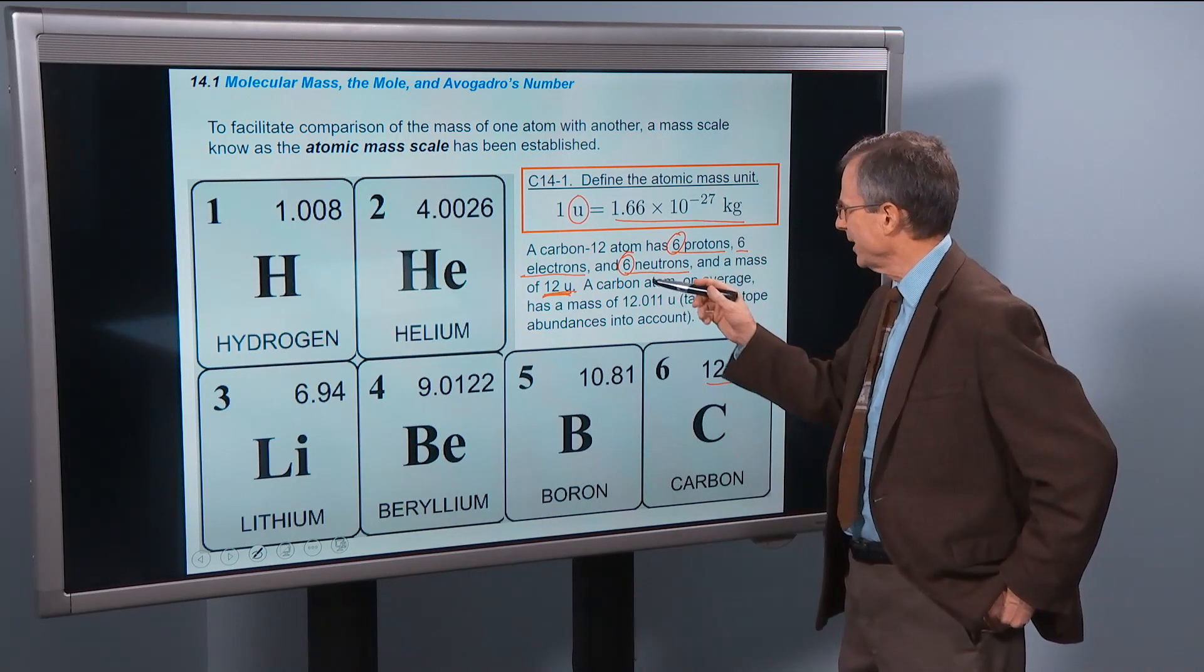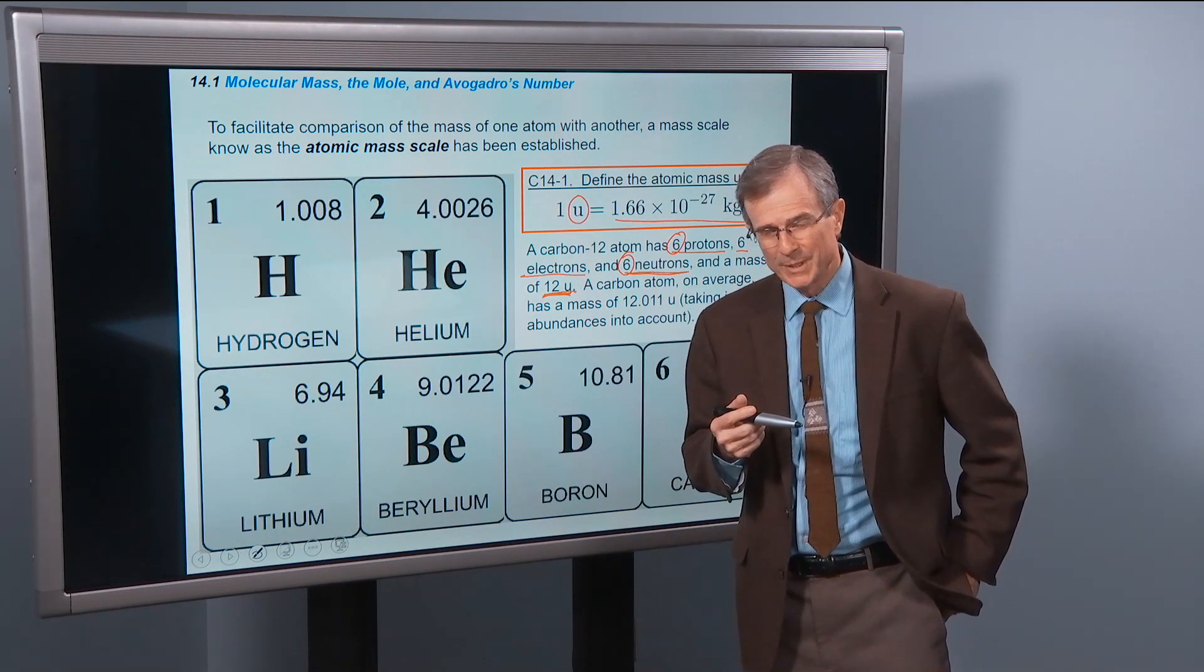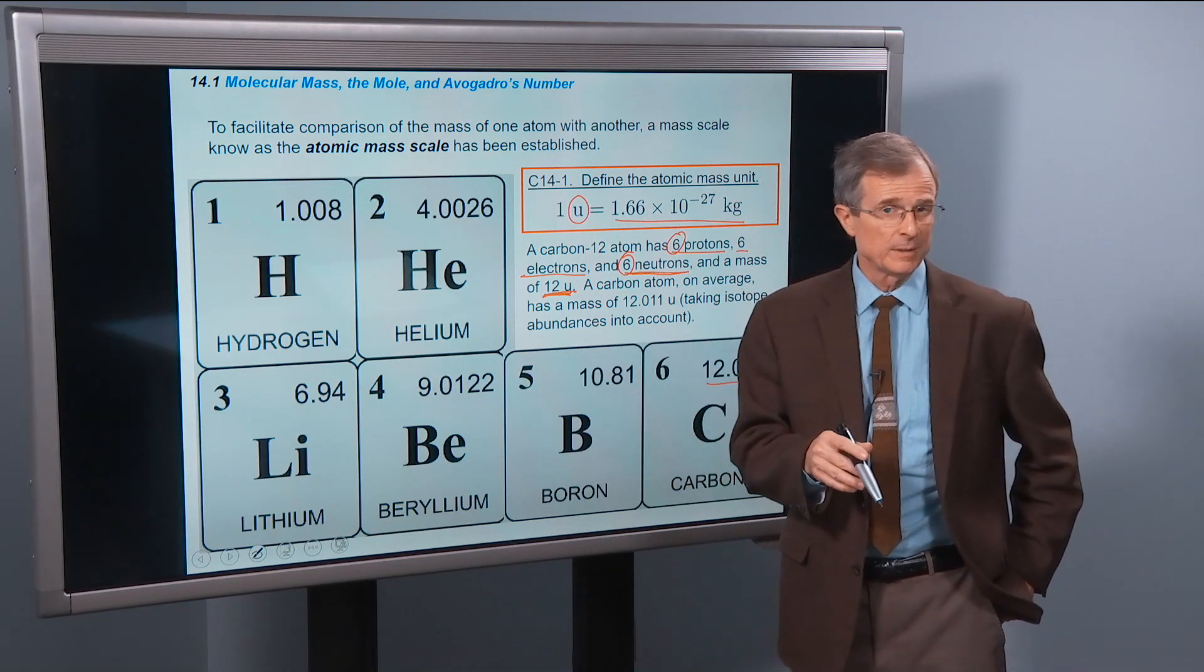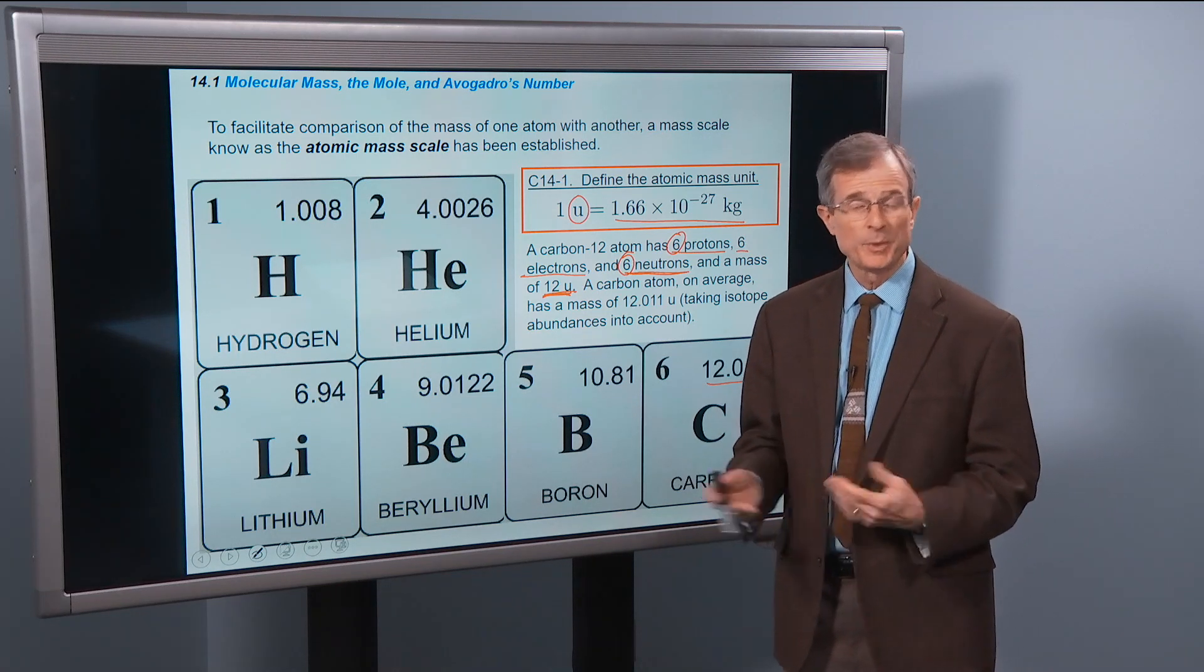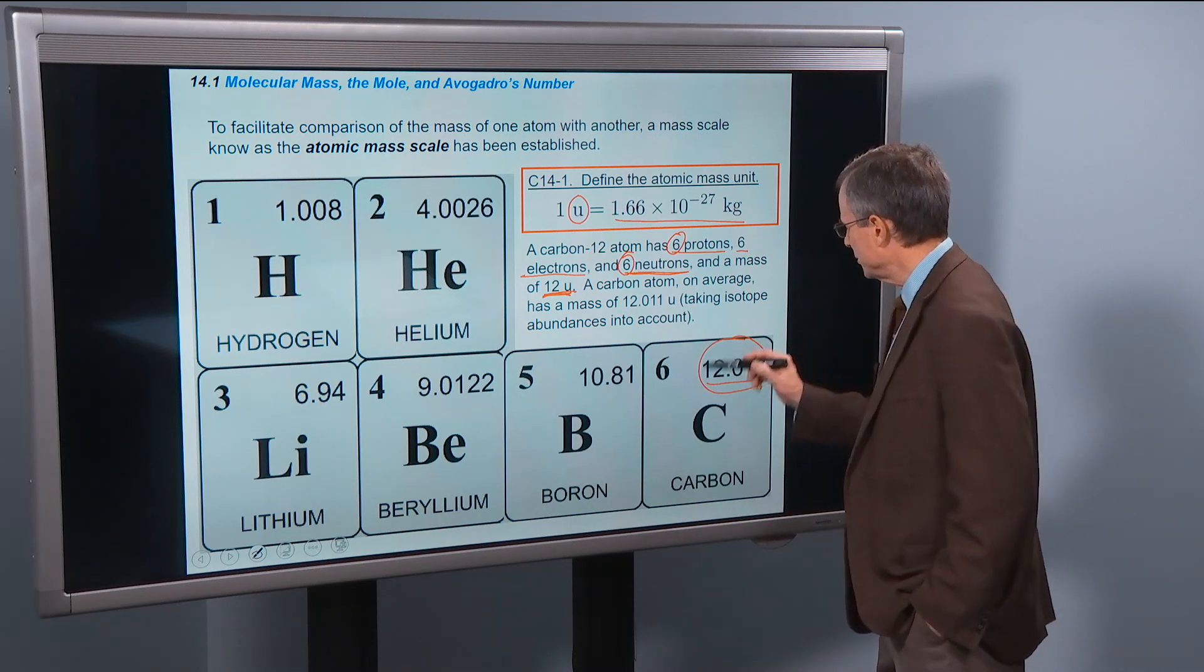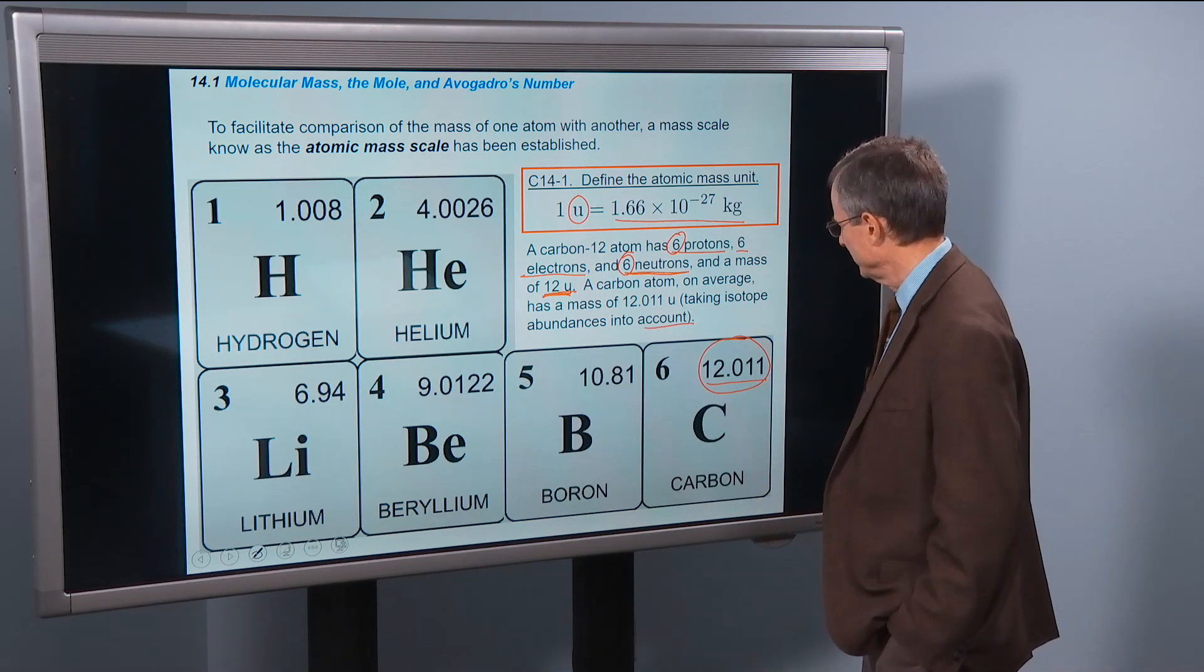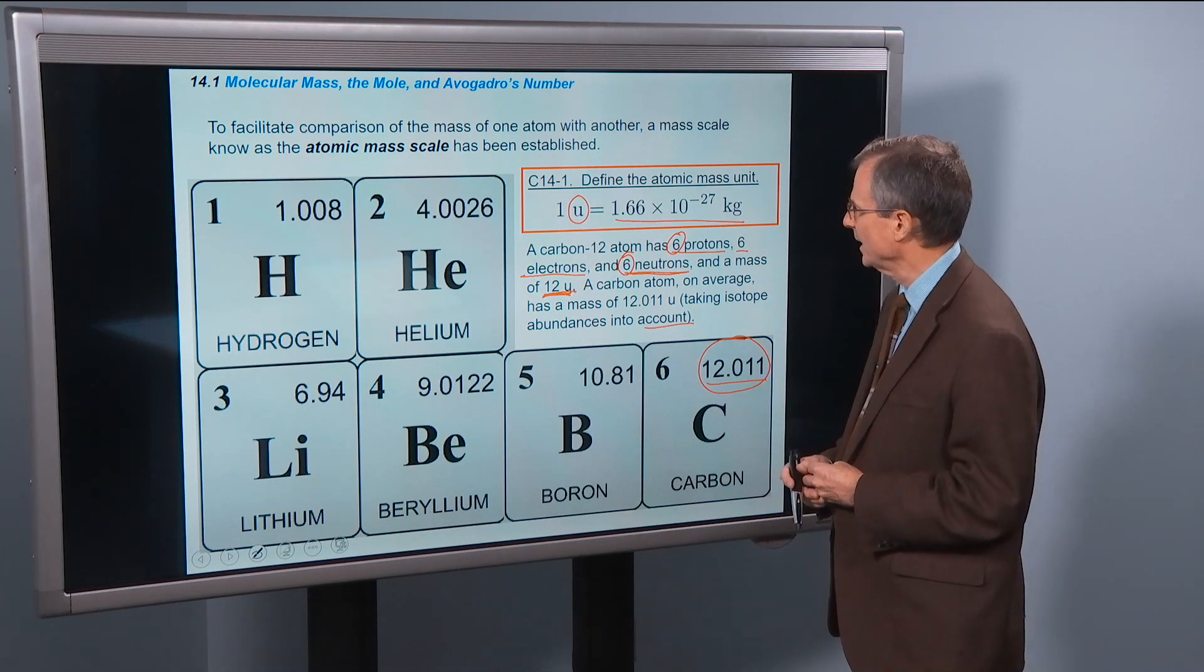The carbon-12 isotope has 6 neutrons in it. The carbon-13 isotope still has 6 protons but has 7 neutrons, and it is much less abundant in nature. This represents an average for the isotopic abundances of carbon in nature. If this were just carbon-12, that number would be 12 exactly.